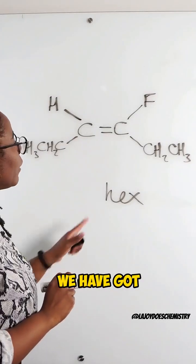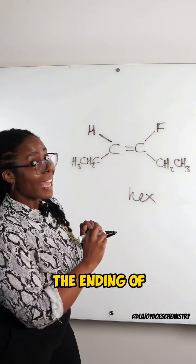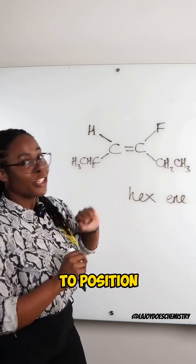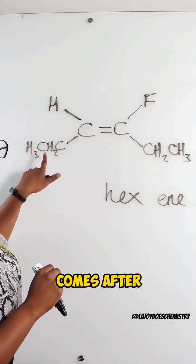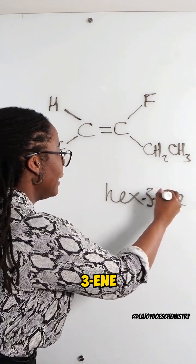We'll then look for our functional group. We have a carbon-carbon double bond, which means we have an alkene making the ending of this molecule, ene. But don't forget to position your double bond. This double bond comes after carbon three, so hex-3-ene.